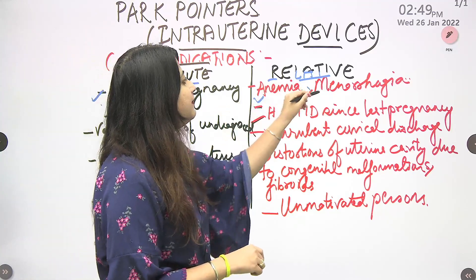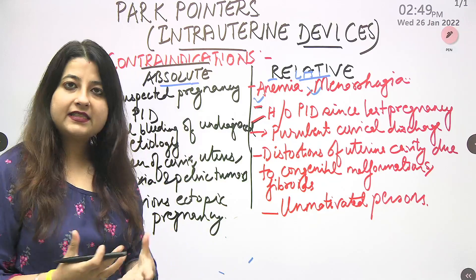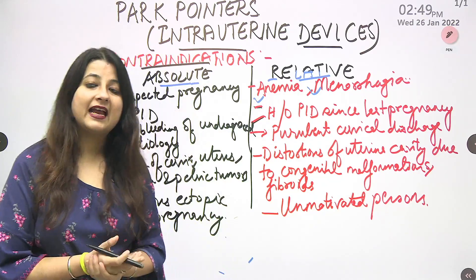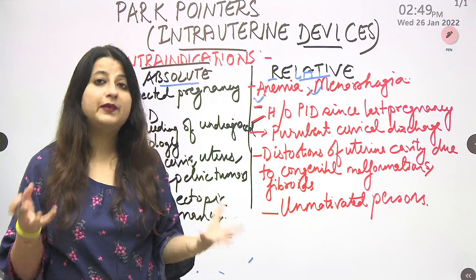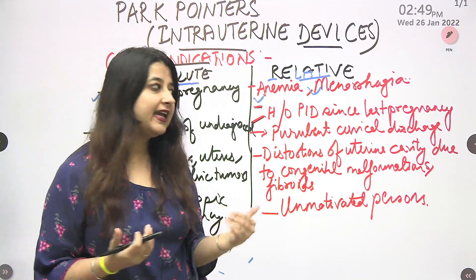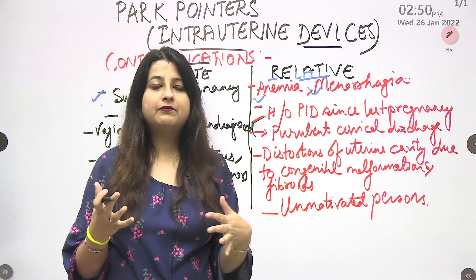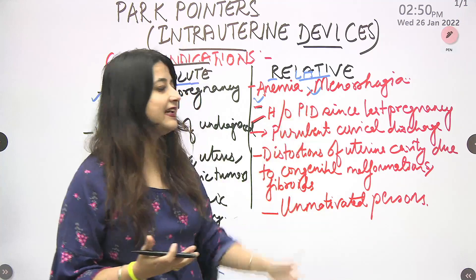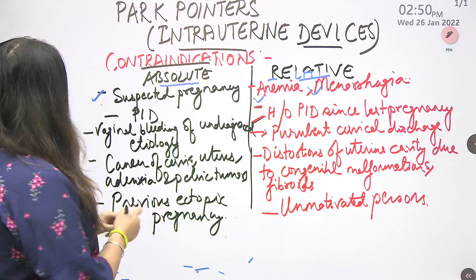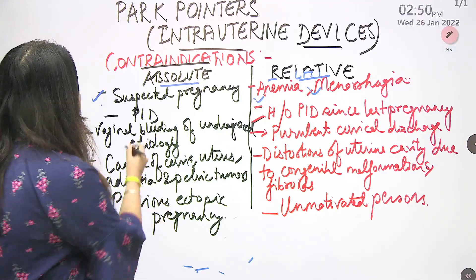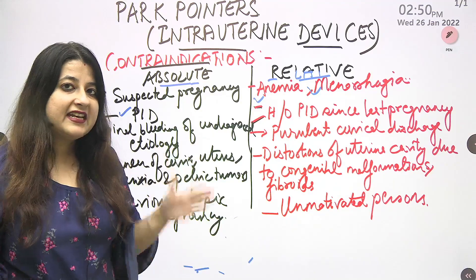On the relative side, the first one is anemia and menorrhagia. Why are anemia and menorrhagia relative? Because the most common side effect reported due to intrauterine device insertion is bleeding. So if a woman is already suffering from anemia and menorrhagia, this could be dangerous — hence it's a relative contraindication. The second absolute contraindication is PID — pelvic inflammatory disease — we cannot insert an IUD in anyone with PID.